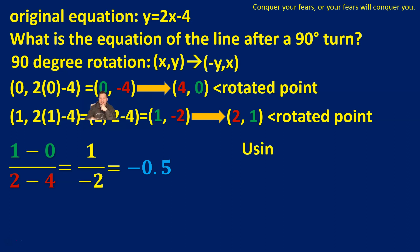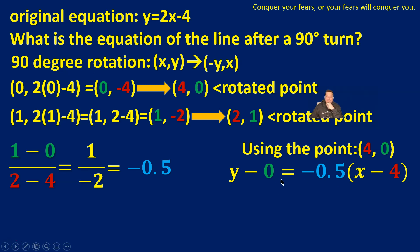So what I can do now is the following. I can use this point as an example: (4, 0). Again, there's nothing special about using the point (4, 0). You can also use the point (2, 1) or whatever points you have generated from doing the transformations 90 degrees. I'm going to use one of these points and the slope that I have found. I'm going to use this equation: y minus 0 equals negative 0.5 times (x minus 4). So this is the slope and point form.